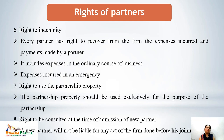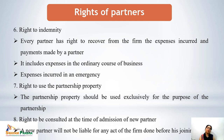The sixth right is the right to indemnity — every partner can recover expenses incurred in the ordinary course of business or in an emergency. The seventh right is the right to use partnership property — since partnership property belongs to the partners, every partner can use it, but exclusively for the purpose of the partnership, not for personal affairs.